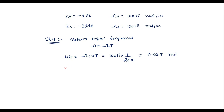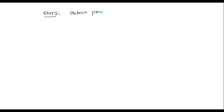Similarly, Ωs = ωs × T = 1000π × (1/2000) = 0.5π radians. Step 2 is to obtain pre-warped band edge frequencies.